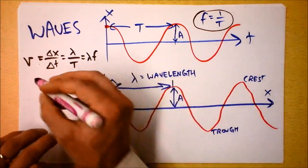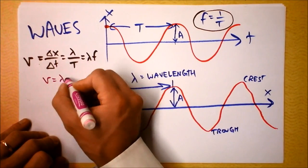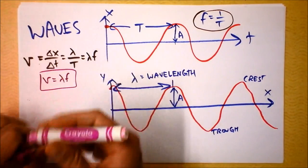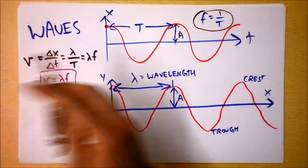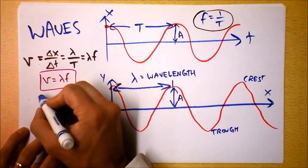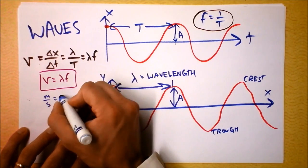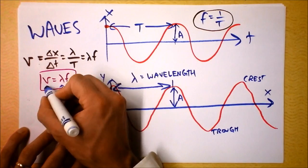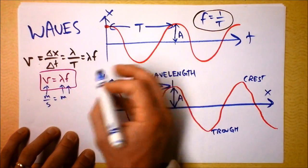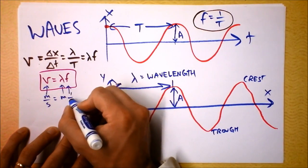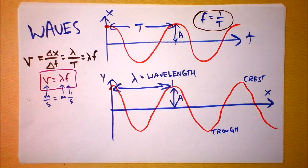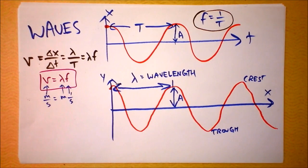V equals lambda times f — that's pretty important, so let's put it in the box. Let's check the units: meters per second equals meters times one over seconds, or hertz. That works out. Dimensional analysis is a very useful system and we're going to use it all the time.